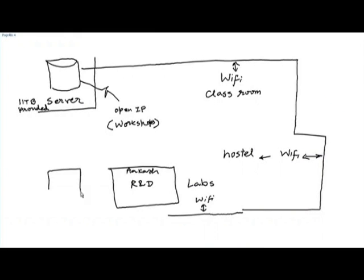A significant amount of development, particularly of educational applications and contents, may happen in other labs — lab 2, lab 3 — in your institute. The Aakash coordinator would receive appropriate instructions to allocate tablets to groups working in different labs. That covers the infrastructure related to Aakash R&D that you will set up.